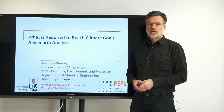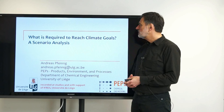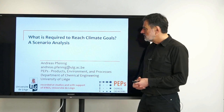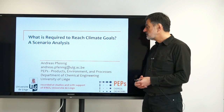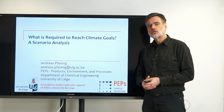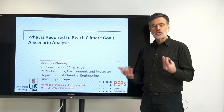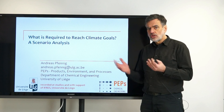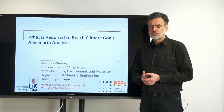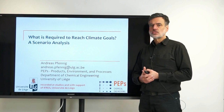Welcome to this video in which I would like to present a scenario analysis on the question: what is required to reach the climate goals? I am Andreas Pfennig, a chemical engineer at the University of Liège in the group Products, Environment and Processes. We frequently use balances to design chemical engineering processes, and one can apply identical balances to global processes created by humans — and that is exactly why I would like to apply these balances to see how we can reach the climate goals.